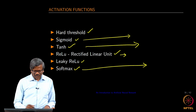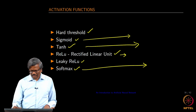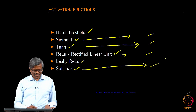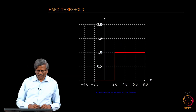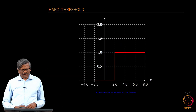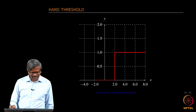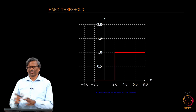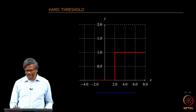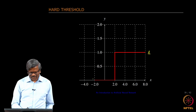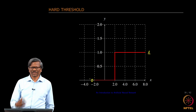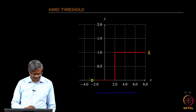Why do we need different sets of activation functions? The hard threshold is something where if a value is beyond a point it is 1, otherwise it is 0. This is the hard threshold we used in the perceptron.